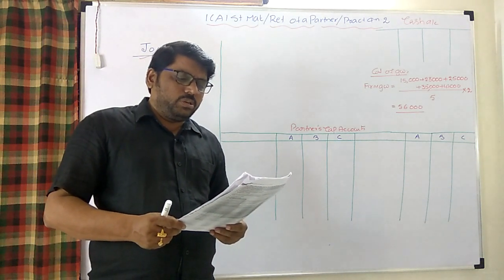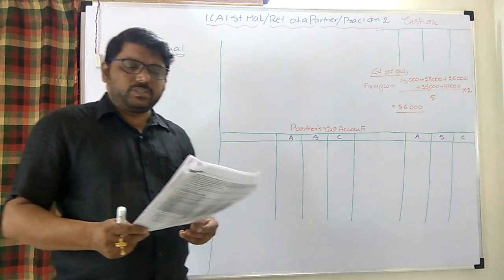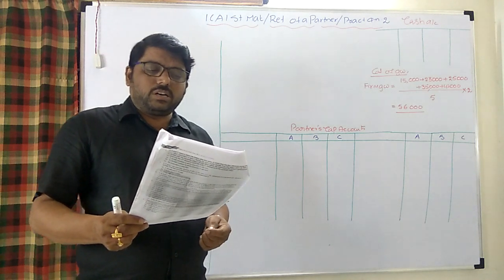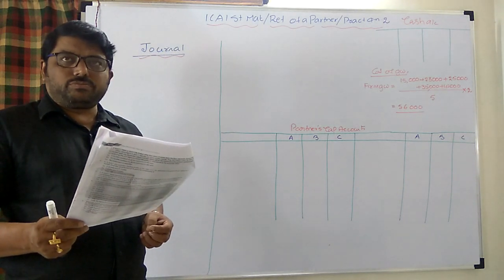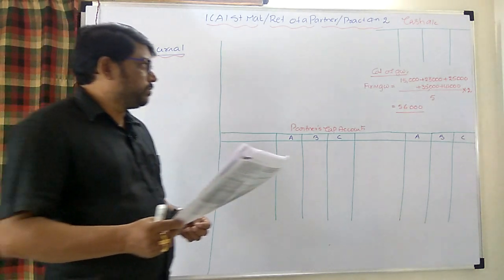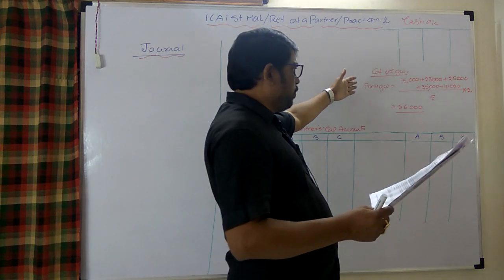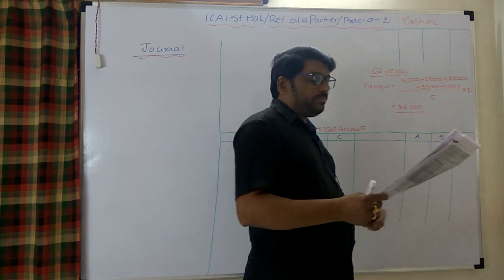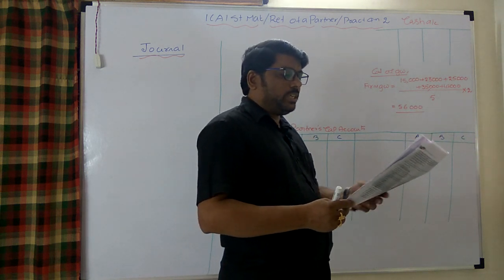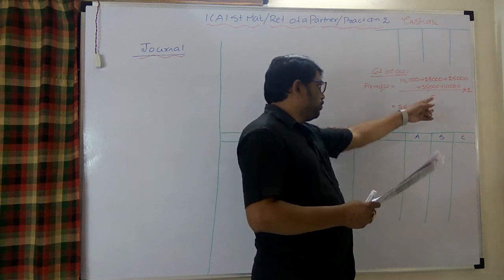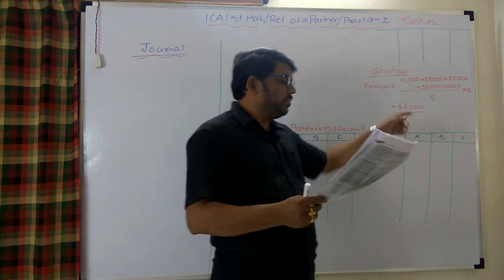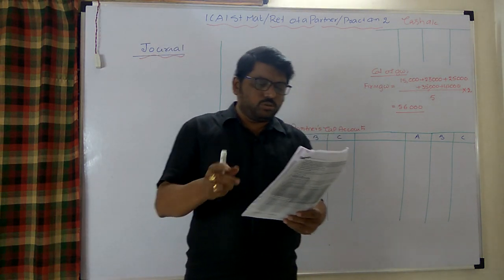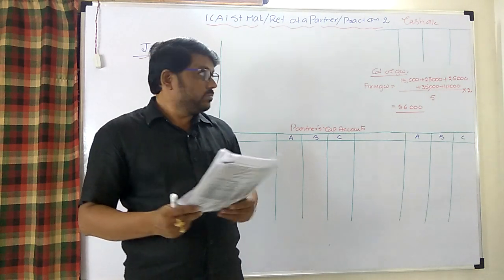Goodwill is to be valued at 2 years' average profits of the past 5 years. The profits given are: 31st March 2012 - 15,000; 2013 - 23,000; 2014 - 25,000; 2015 - 35,000; 2016 - 42,000. Adding all and dividing by 5 gives the average, multiplied by 2 gives the firm goodwill of 56,000.